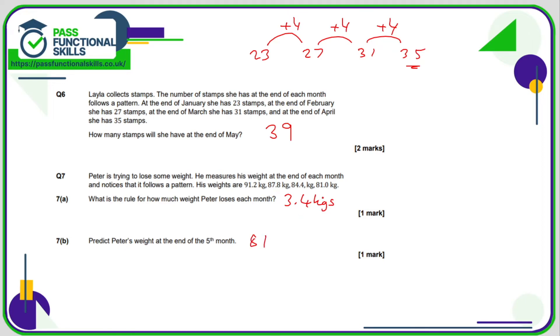And at the end of the fifth month, all we're going to do is subtract 3.4 from the previous or the last known weight, 81.0, and that comes to a total of 77.6, easy enough if you're using a calculator.